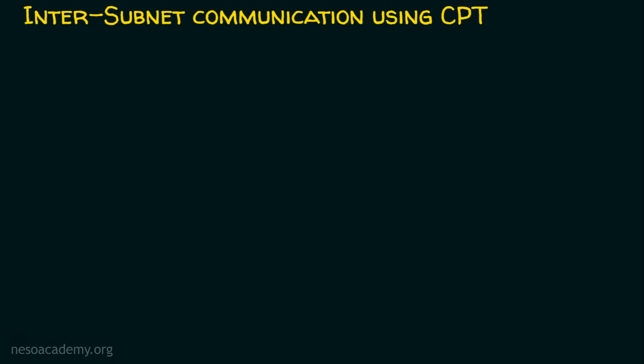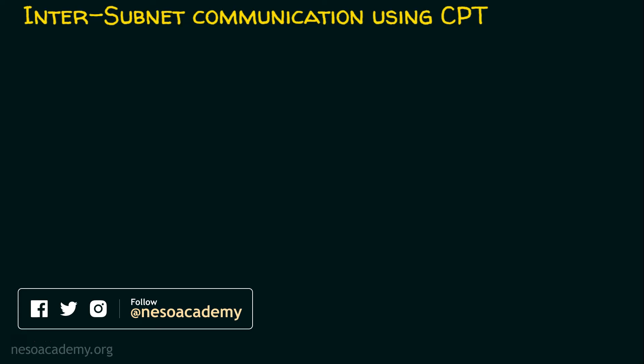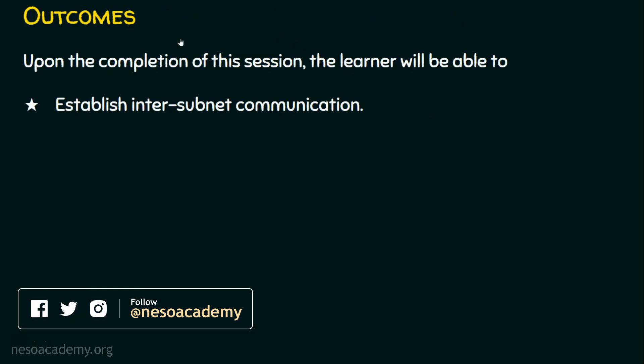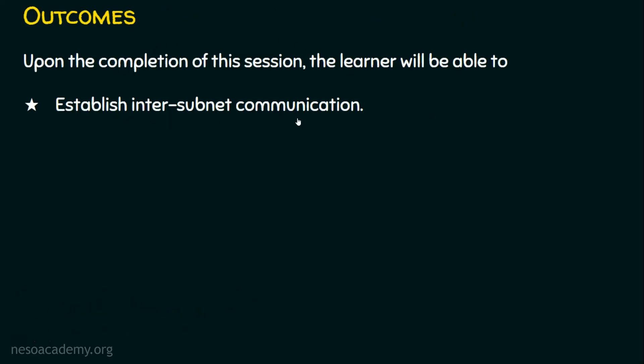That's inter-subnet communication using Cisco Packet Tracer. Inter-subnet communication can also be termed inter-LAN communication, because each subnet is one local area network. I hope you now know how to establish inter-subnet communication. Thank you for watching.